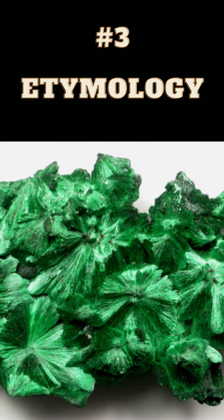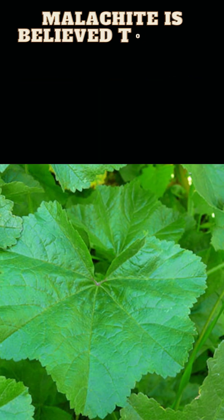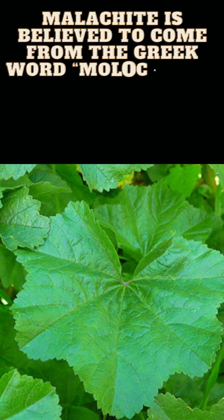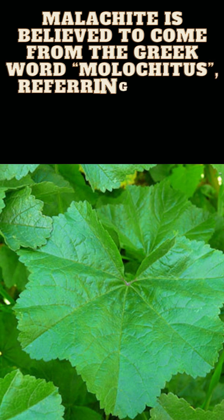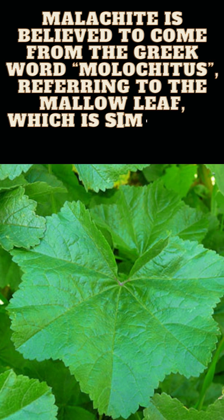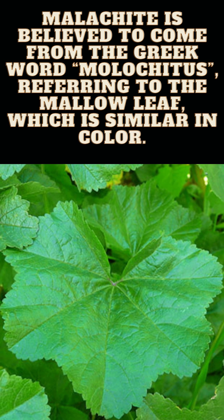3. Etymology. Malachite is believed to come from the Greek word malachitis, referring to the mallow leaf, which is similar in color.